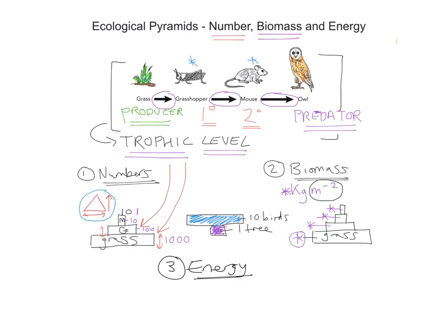The Pyramid of Numbers simply shows the numbers; the Pyramid of Biomass shows the amount of biological material at each trophic level within a given area. The Pyramid of Energy takes into consideration not just the amount of energy in kilojoules, but also how much energy there is in a particular area within a habitat. Crucially, it also takes into consideration seasonal fluctuations and things like hibernation, when there may be more or less of a certain organism. The units are kilojoules per metre squared per year.